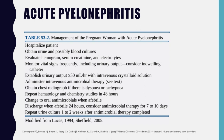Here is an outline for managing pregnant women with acute pyelonephritis: admit or hospitalize the patient; obtain urine and possibly blood cultures; evaluate the hemogram and serum creatinine and electrolytes; monitor vital signs frequently including urinary output; establish urinary output greater than 50 mL per hour with intravenous crystalloid; administer IV antimicrobials; obtain chest radiograph if there is dyspnea or tachypnea; repeat hematology and chemistry studies in 48 hours; change to oral antimicrobials when afebrile; discharge when afebrile for 24 hours and consider antimicrobial therapy for 7 to 10 days; repeat urine culture 1 to 2 weeks after completion of antimicrobial therapy.